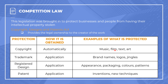Things covered by copyright include music, film, text, and artwork. When it comes to a trademark, you need to apply for one — it covers things like brand names, logos, and jingles to stop other people copying your style. With a registered design, you also need to apply, and it covers things like the appearance, packaging, colours, and patterns that apply to a product. A patent also requires an application and covers inventions, new techniques, and technologies. Each of these sections is part of one piece of legislation that is around 230 pages long — it's a really important piece of legislation because it can seriously hurt your business if you don't follow it.